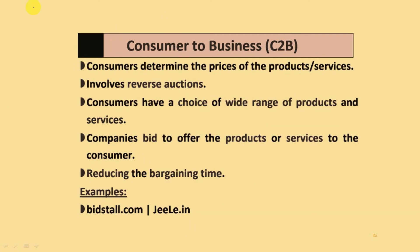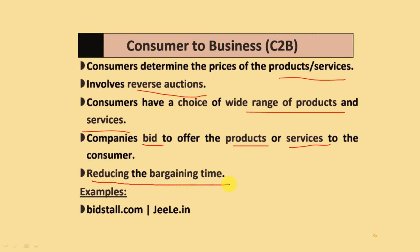Consumer to Business (C2B): in this model, consumers determine the price of the product or services. It involves reverse auctions where customers have a wide range of products and services to choose from. Companies bid to offer products and services to consumers, reducing bargaining times. Examples are Bidstall.com and Zigly.in.